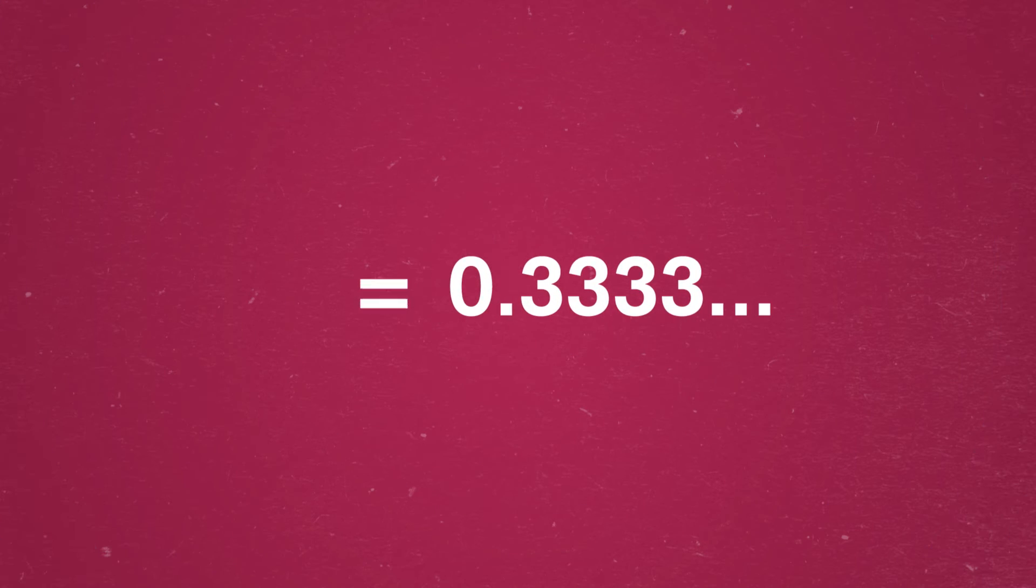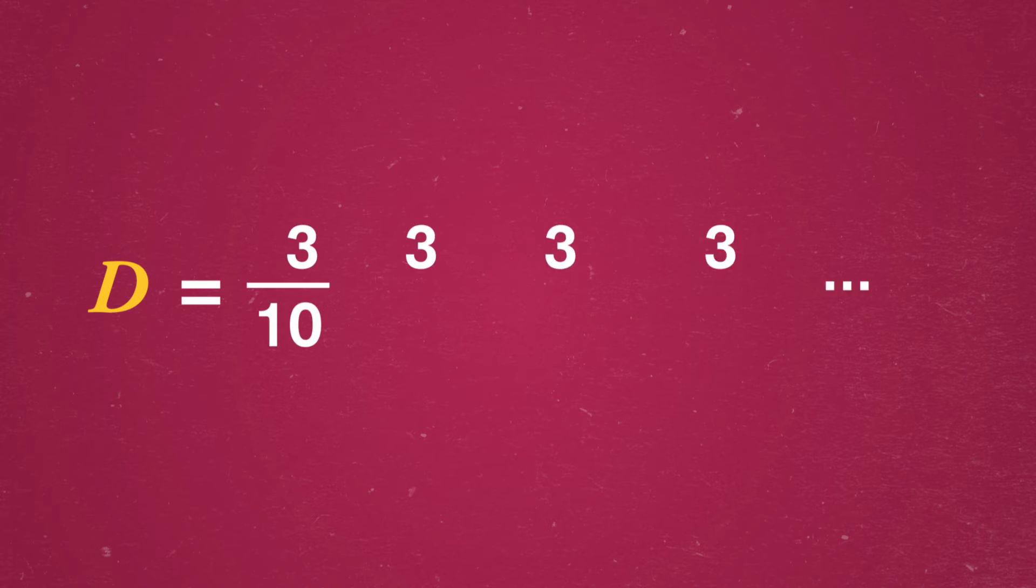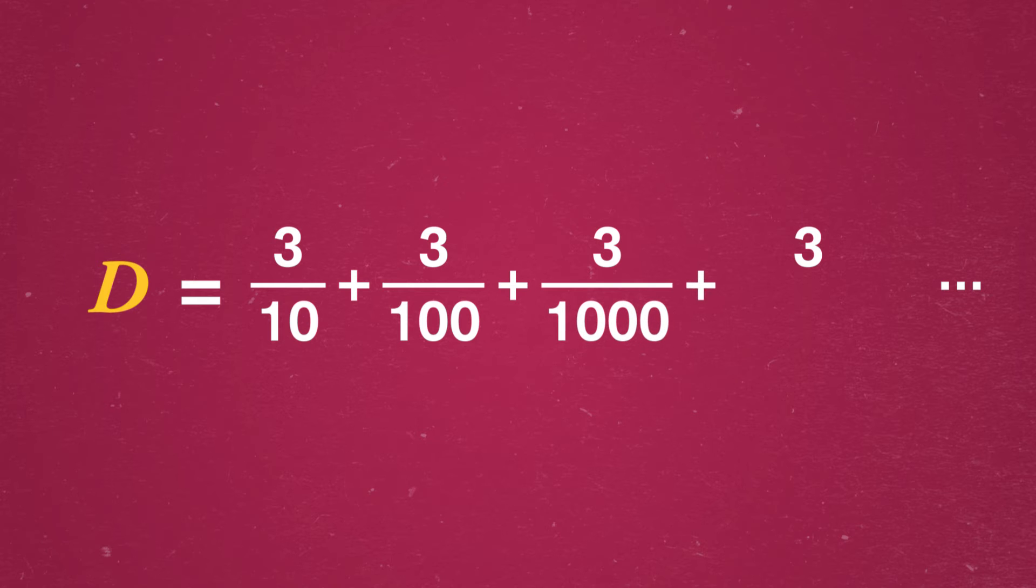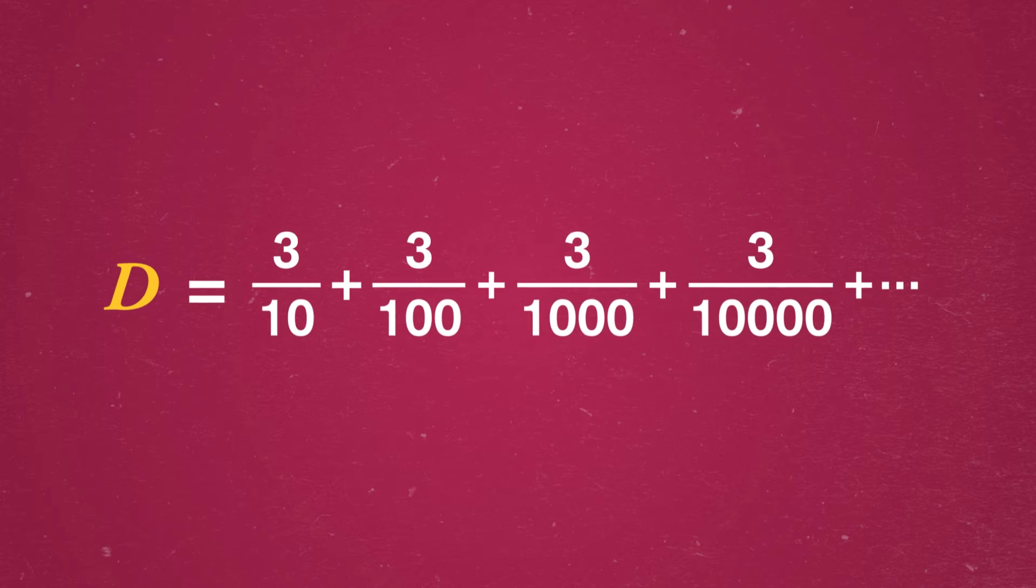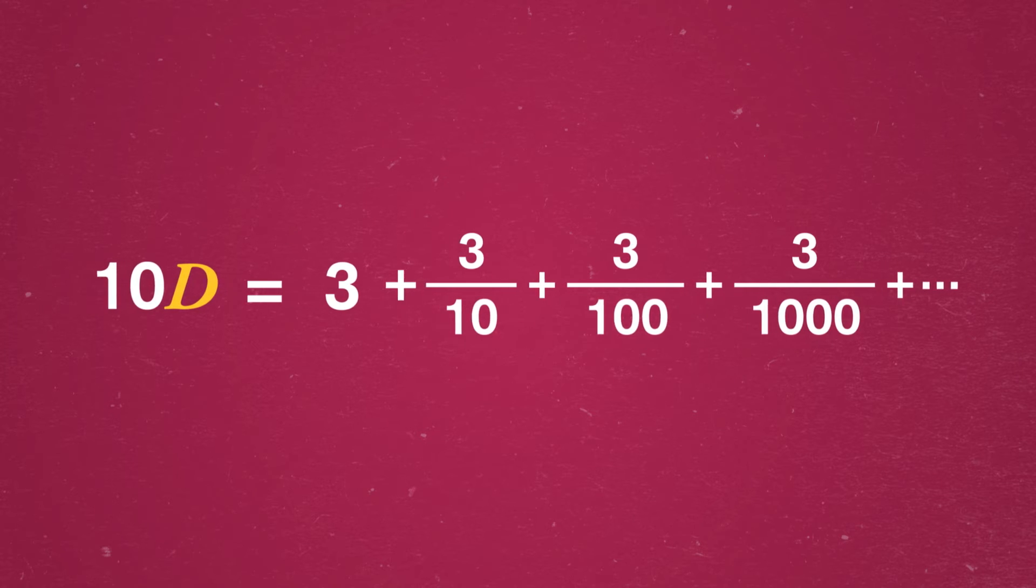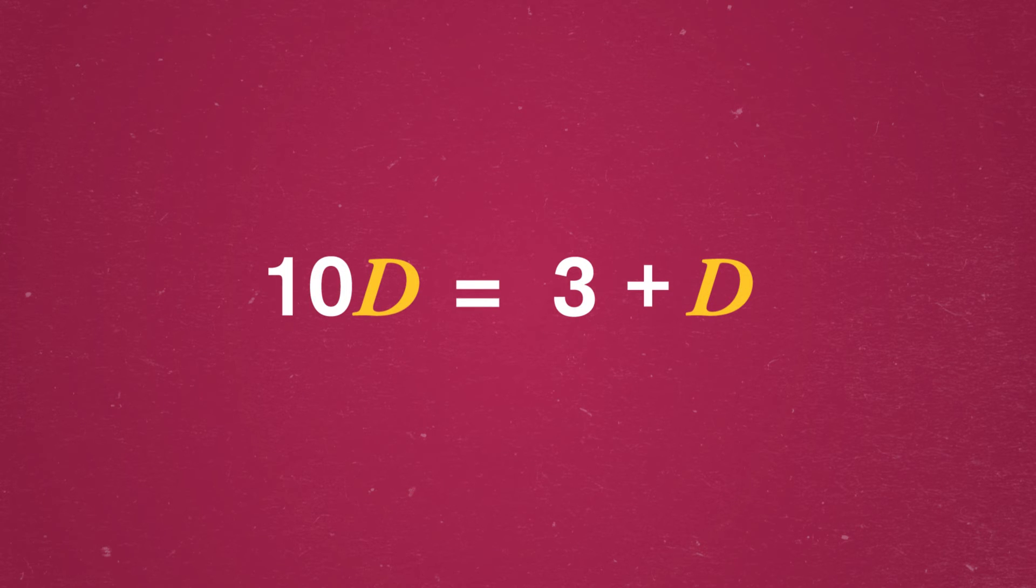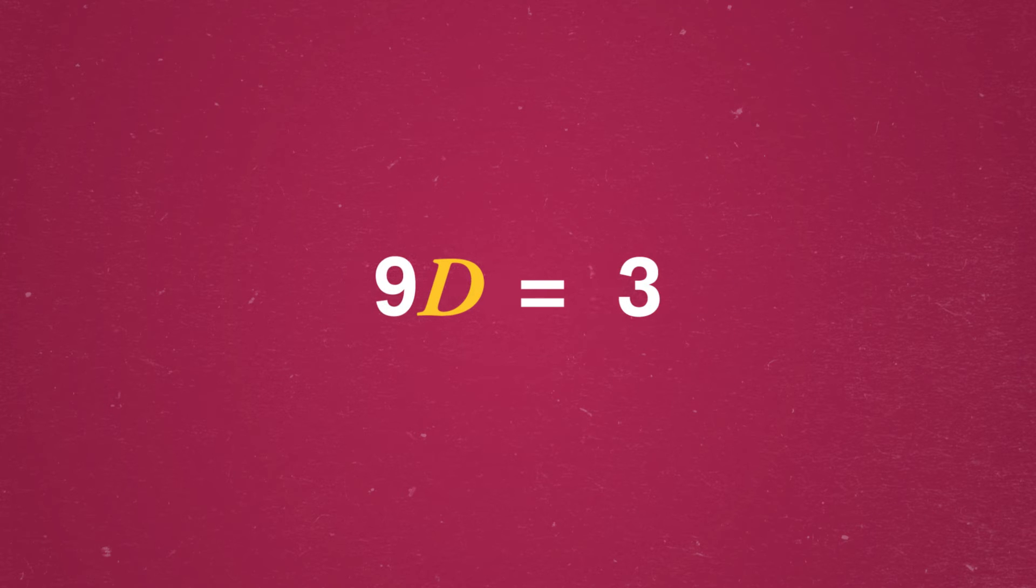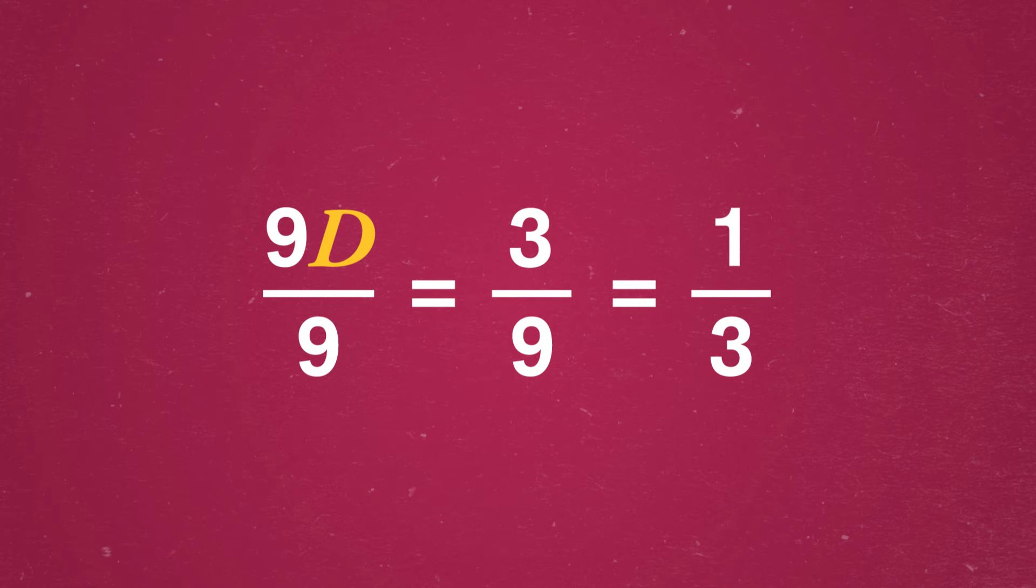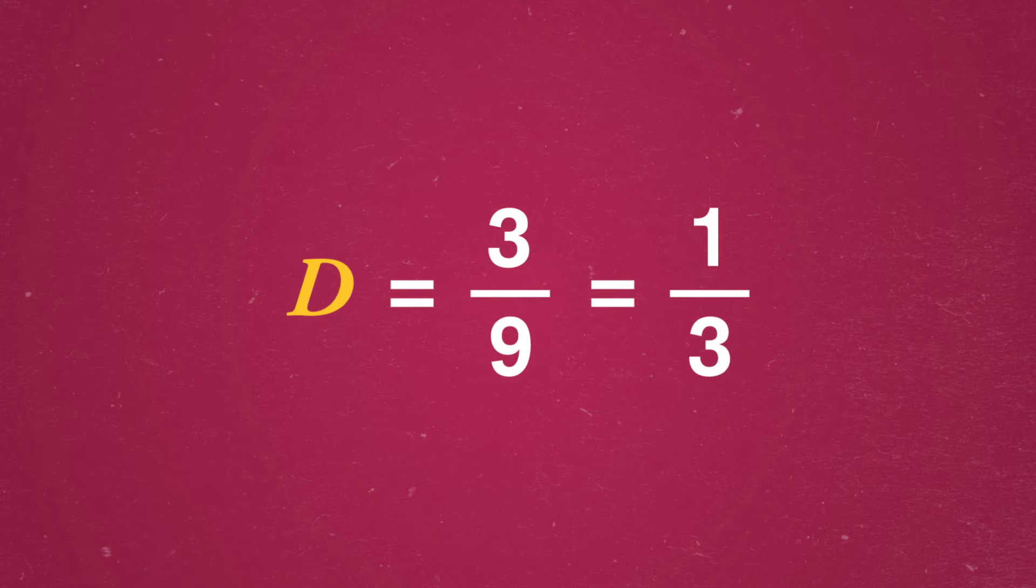Start with our decimal, and give it a name, like d for decimal. Now 0.33333 forever is really 3 tenths plus 3 hundredths plus 3 thousandths and so on. And we're calling it d. Multiply both sides by 10 to keep the equation balanced. And now the fractions on the right side actually form another d. And to simplify, we can subtract a d from both sides, which leaves us with the equivalent equation 9d equals 3. So indeed, d must be 1 third. Any decimal that has a repeating pattern must match a fraction. And this technique explains why.